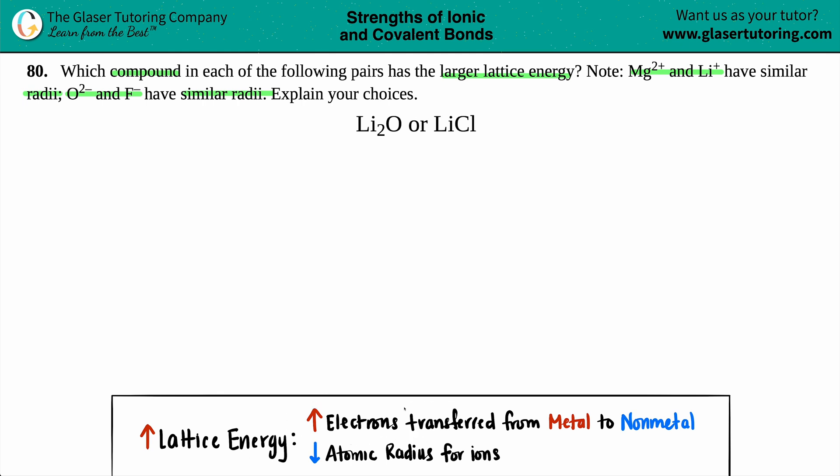The more electrons that are transferred from one metal to another will increase the attraction and make it harder to pull that ionic compound apart, so it will increase the lattice energy.